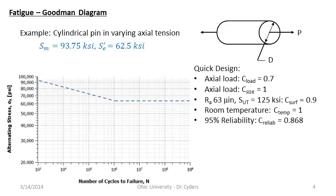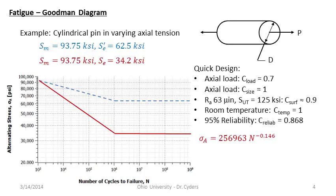Moving on: RA 63 micro-inches with an ultimate tensile strength of 125 KSI gives C_surf around 0.9 — a fine surface finish with a moderately high ultimate tensile strength. Room temperature so C_temp is 1. For 95% reliability, C_reliability is 0.868. Taking 0.7 × 0.9 × 0.868, we get a corrected endurance strength of 34.2 KSI. From the logarithmic math, the SN curve equation is σ_A = 256,963 × N^(-0.146).